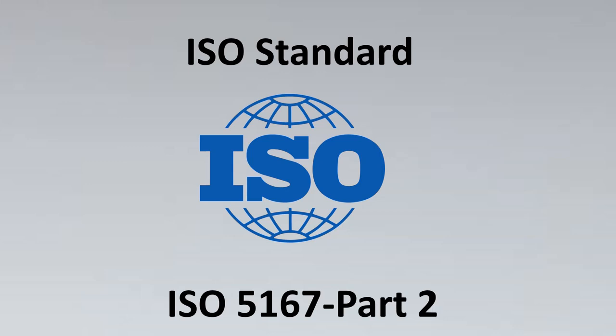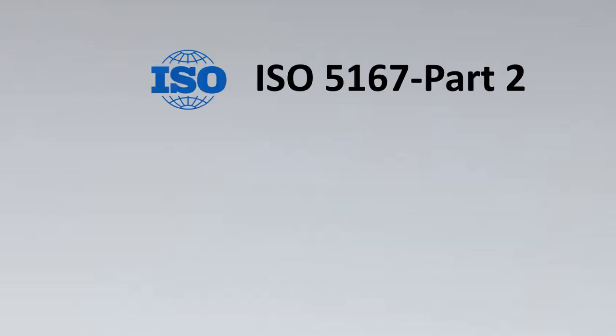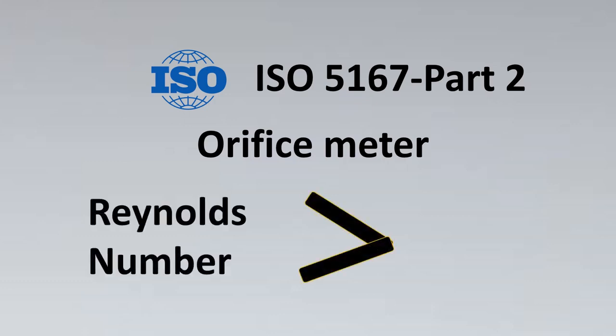And this standard has an amazing observation. It states that the orifice meters should have a Reynolds number that should be greater than 5000. Note that Reynolds number is a dimensionless number. It has no units to it. So if you see here, this 5000 is the minimum criteria if you want your orifice flow meters to comply with this world-renowned standard ISO 5167. So if in your application your Reynolds number is lesser than this, then you might not be able to go for orifice flow meters and you should go for some other flow meter technologies.